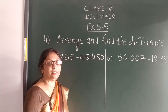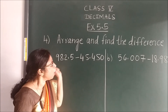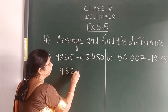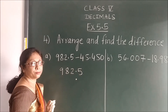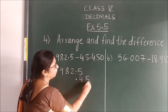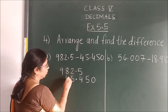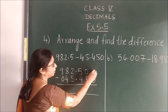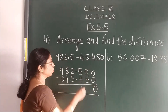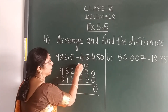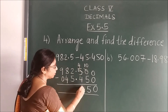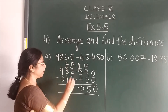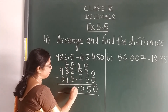Now question number 4: arrange and find the difference. It is given in horizontal way, so first make it vertical, then subtract. Write this number with point, below point place point, then write 4, 5, 0. Before point: 5, 4. Place 0 wherever there is a gap. Carry out simple subtraction: 0 minus 0 is 0. 0 — 5 goes no, borrow. This becomes 10, this becomes 1 less. 10 minus 5 is 5. 4 minus 4 is 0. 2 minus 5 not possible, borrow. This becomes 12, this becomes 7. 12 minus 5 is 7. 7 minus 4 is 3. And then this is 9.